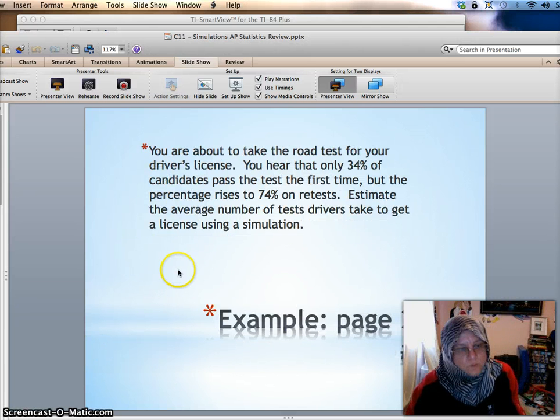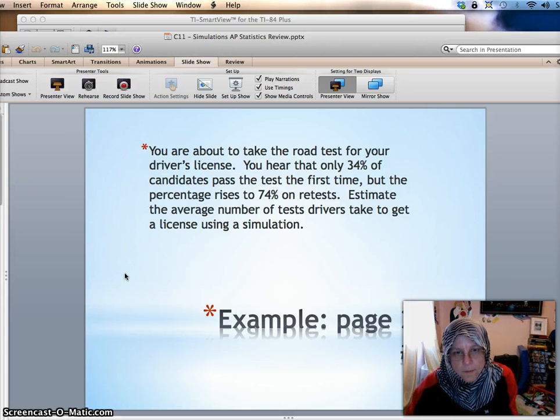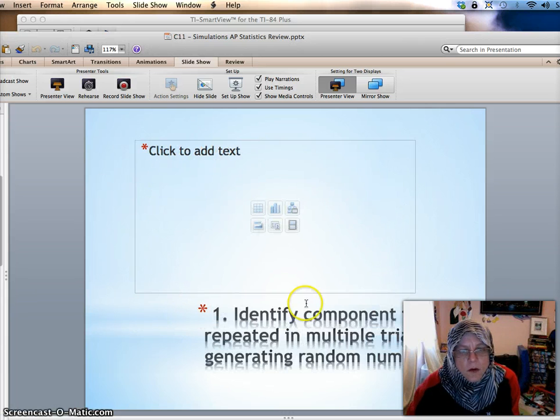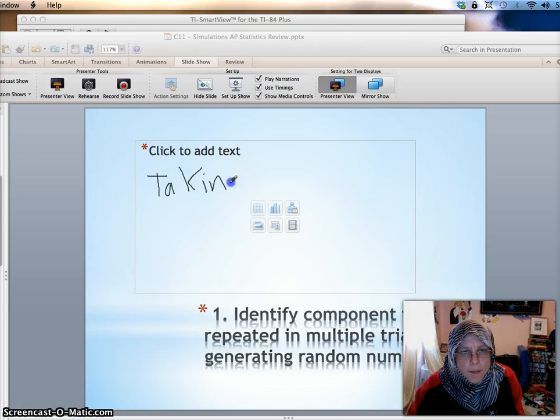So let's look at an example. You are about to take the road test for your driver's license. You hear that only 34% of candidates pass the test the first time, but the percentage rises to 74% on subsequent tests. Estimate the average number of tests drivers take to get a license using a simulation. So, go to the next slide. Okay. So we need to identify the component to be repeated in multiple trials of generating random numbers. So what is it that I want to simulate over and over? Taking the driving test, right?